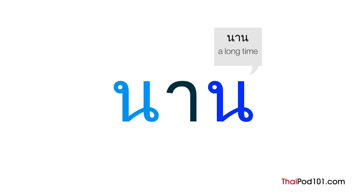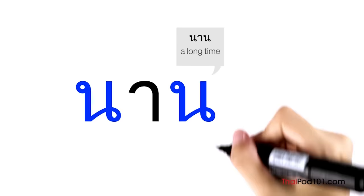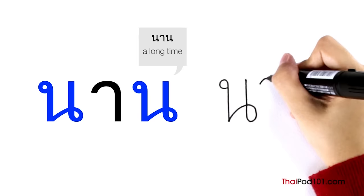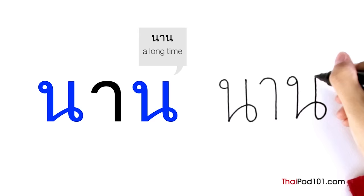Let's write naan now: Naw Nu, Sara A, Naw Nu — naan. Wow, you've already learned how to write three words in Thai. See? It's not that hard after all.